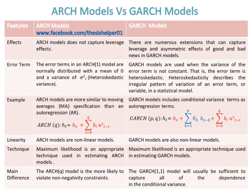ARCH models are non-linear models, whereas GARCH models are also non-linear models. Maximum likelihood is an appropriate technique used in estimating both ARCH and GARCH models. The main difference between ARCH-Q and GARCH(1,1) is that the ARCH-Q model is more likely to violate non-negativity constraints, whereas the GARCH(1,1) model will usually be sufficient to capture all of the dependence in the conditional variance.